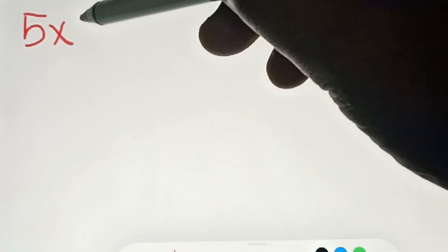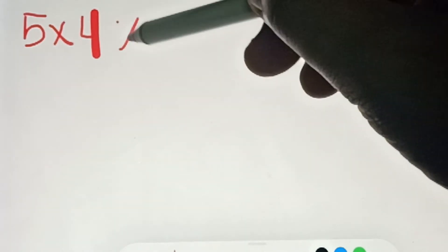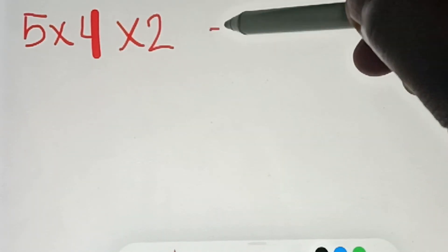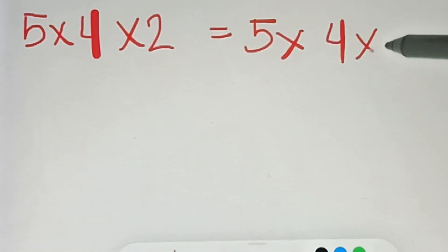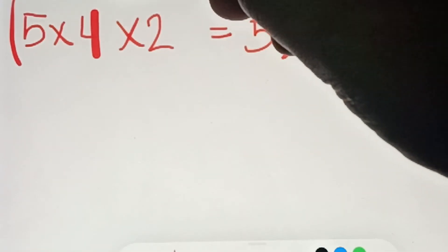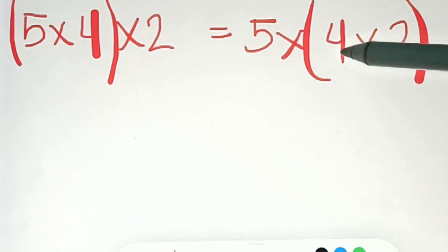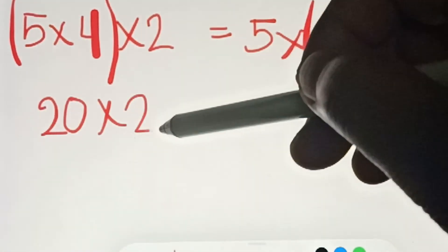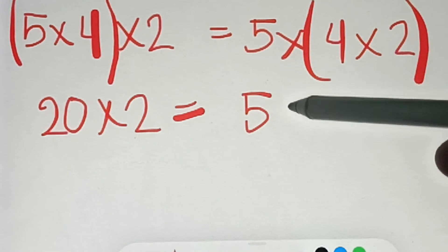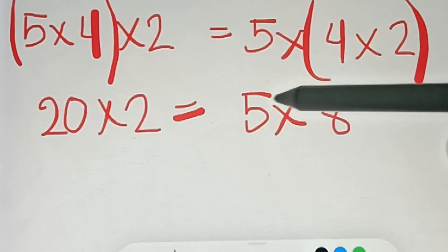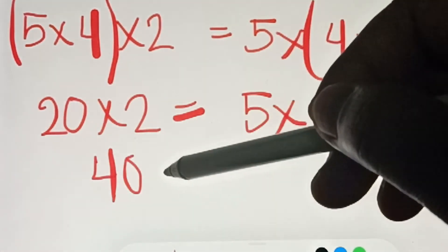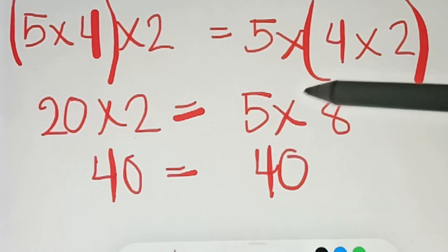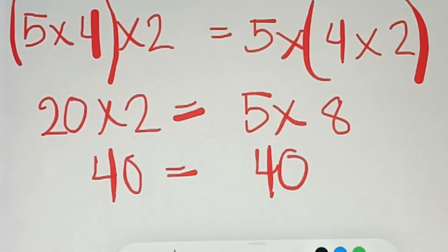Now for the associative property of multiplication. If you have 5 times 4 times 2, we multiply the first two numbers: (5 times 4) times 2 — 5 times 4 is 20, times 2 equals 40. On the other side, 5 times (4 times 2) — 4 times 2 is 8, and 5 times 8 is also 40.